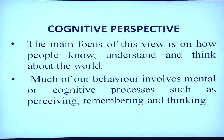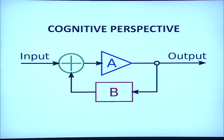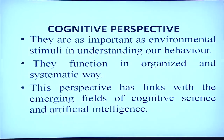The next perspective is the cognitive perspective. The main focus of this view is on how people know, understand, and think about the world. Much of our behavior involves mental or cognitive processes such as perceiving, remembering, and thinking. The cognitive perspective works on a computer model: just as a computer receives input, processes it, and produces output, the mind receives information as input, processes it, and produces an output in the form of behavior. These mental processes function in an organized and systematic way.